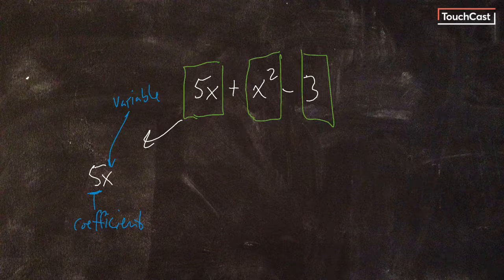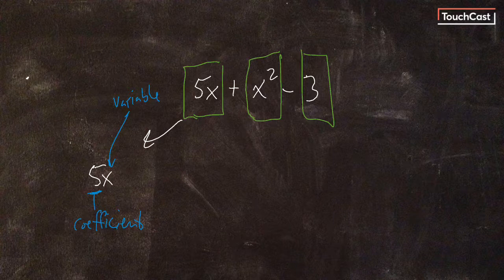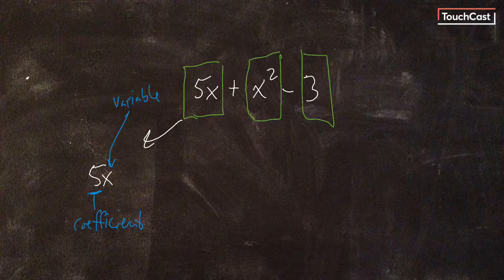All terms have a variable, or sometimes they have a variable, sometimes they don't have a variable, like in the case of 3. 3 is just a constant number.